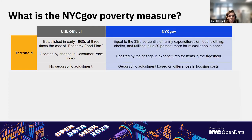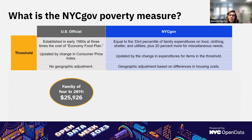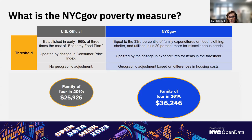By contrast, our measure takes much more into account. We define it as the 33rd percentile of what families are spending on food, clothing, shelter, utilities, plus an additional 20%. We update these values based on data from the Consumer Expenditure Survey, and we also include a geographic adjustment to account for the higher housing costs in the city. This means that our threshold is higher than that of the official poverty measure. For example, in 2019 the official poverty threshold for a family of four was about $26,000, whereas our threshold for that year was $36,000.